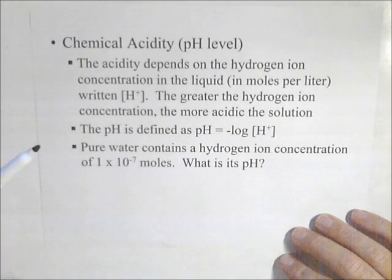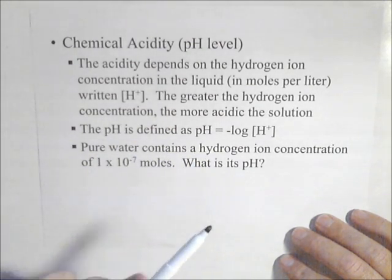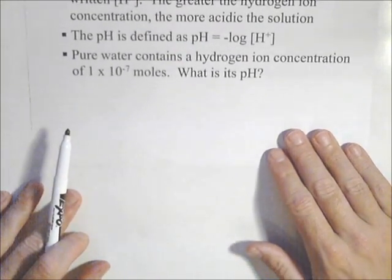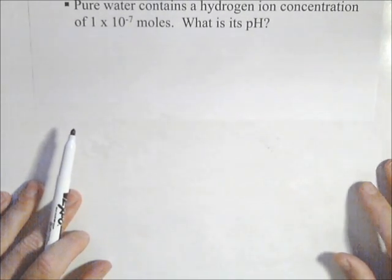Now the pH value is defined as pH equals negative log of H+. So pure water contains a hydrogen ion concentration of 1 × 10^-7. What is its pH?